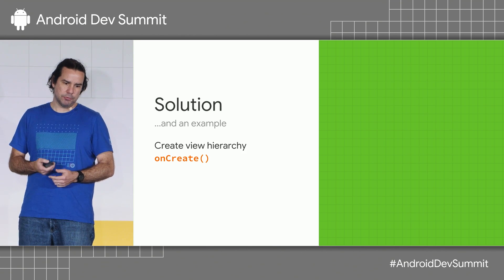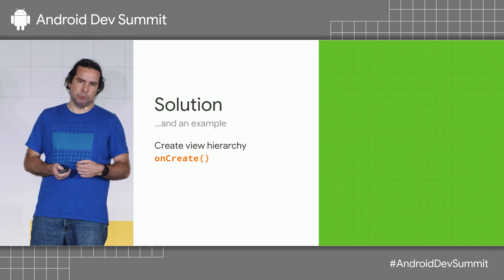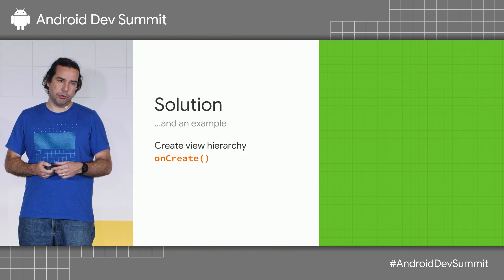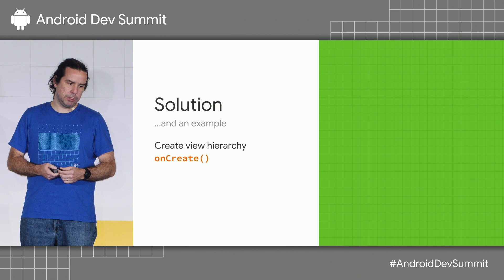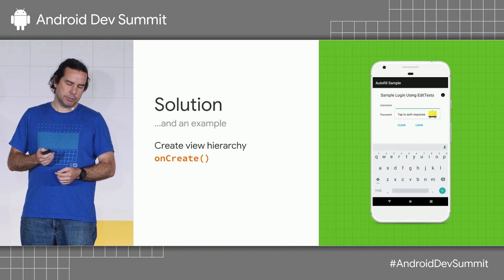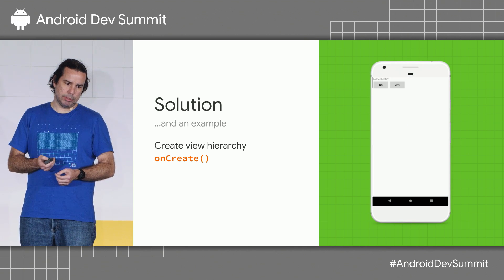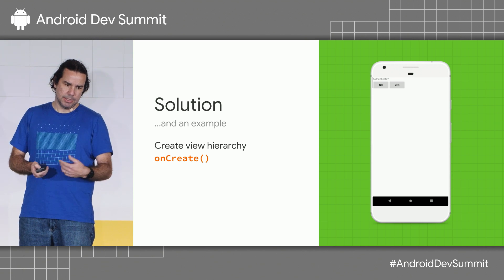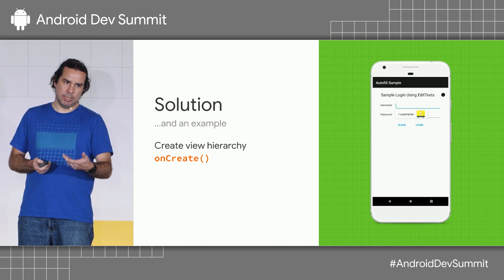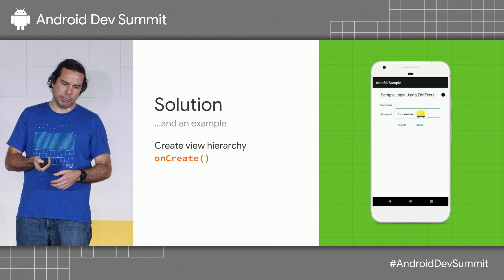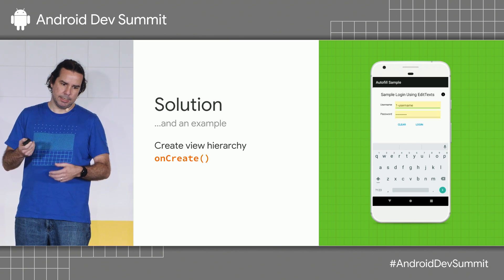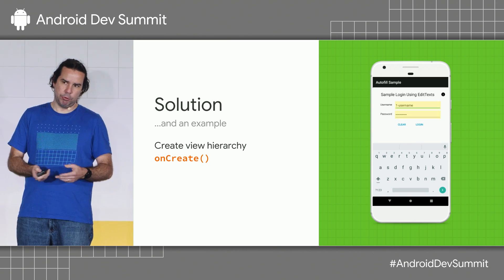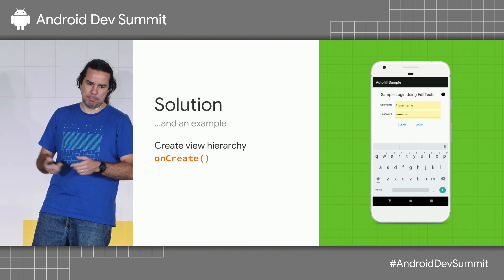The solution for this case is simply to make sure you create your view hierarchy in onCreate. When the user taps to authenticate, we still launch the authentication activity and the user says yes. When we go back, we show the unlocked data, the user selects it, we autofill — and everybody's happy.